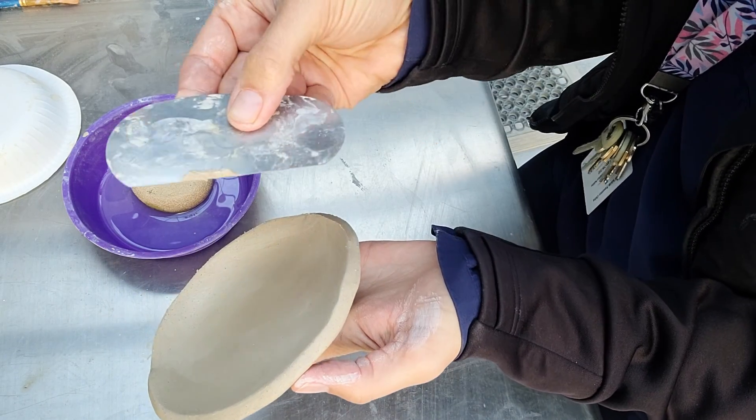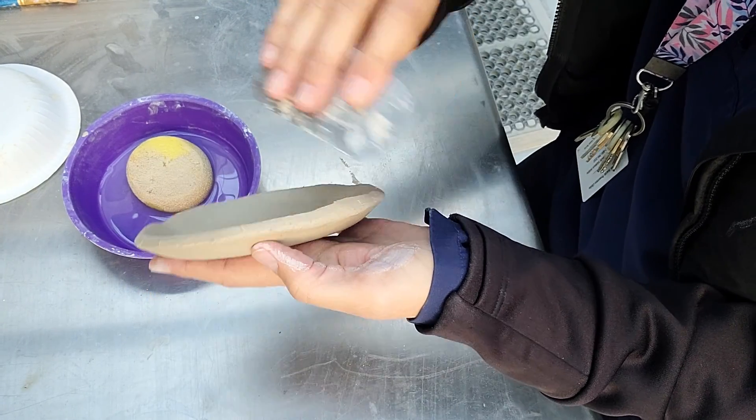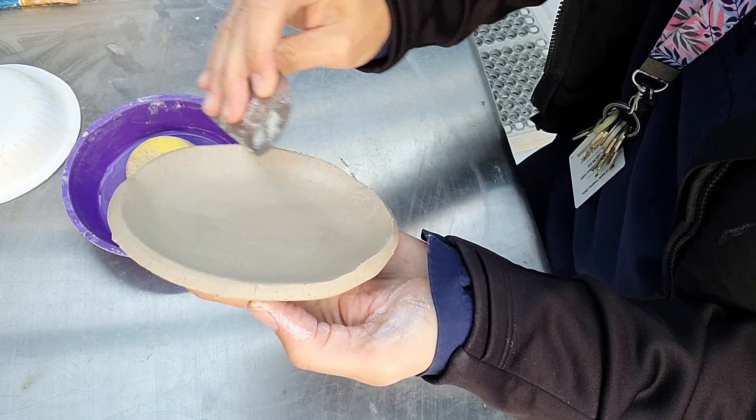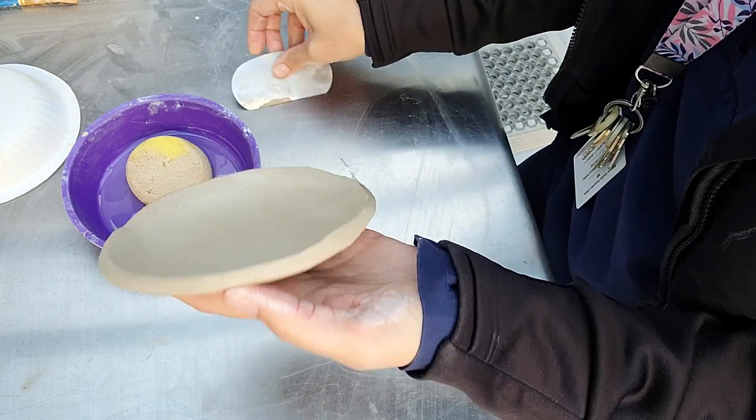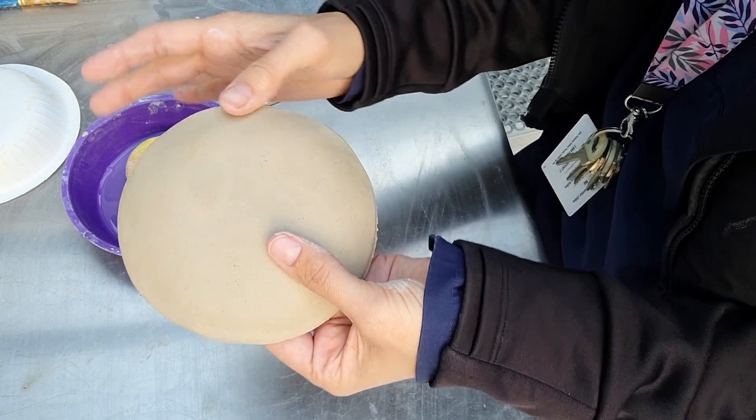So you can be the artist here, determine what you want that exterior shape to look like, and really stamp out any imperfections. Same thing on the bottom—you can use your sponge, really clean it up, and prepare it for the next step, which is going to be carving.